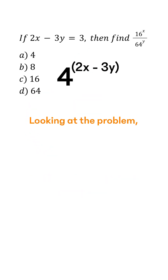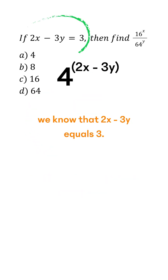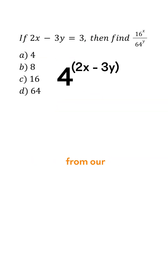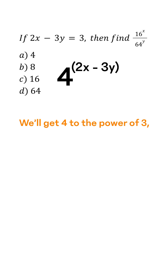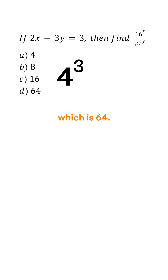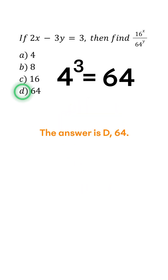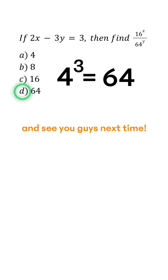Looking at the problem, we know that 2x minus 3y equals three, so we're just one step away from our final answer. We'll get four to the power of three, which is 64. Here you go, the answer is D, 64. Hope this helps, and see you guys next time.